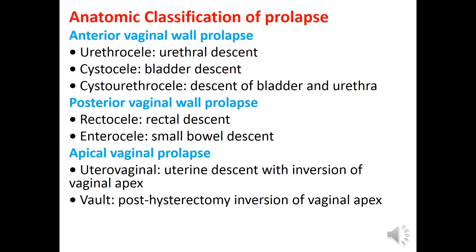Posterior vaginal wall prolapse includes rectocele (rectal descent) and enterocele (small bowel descent).